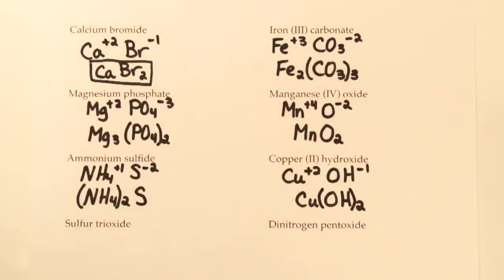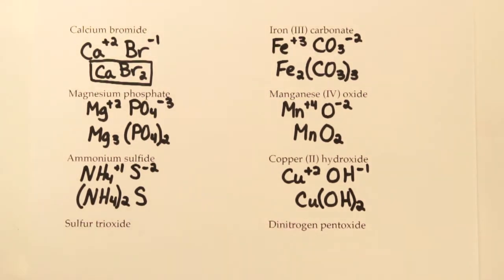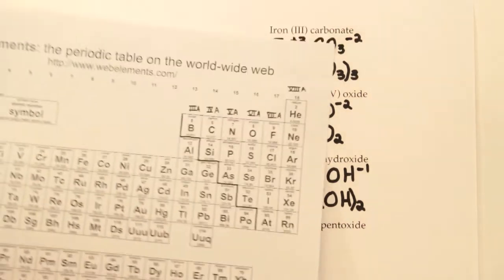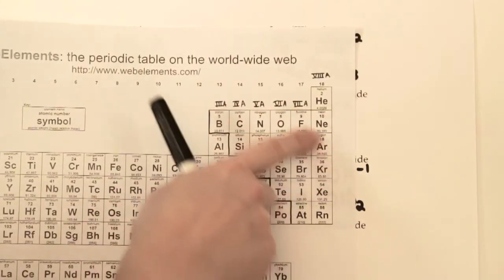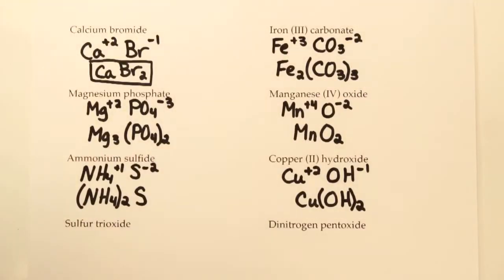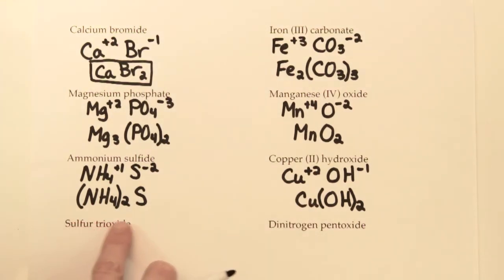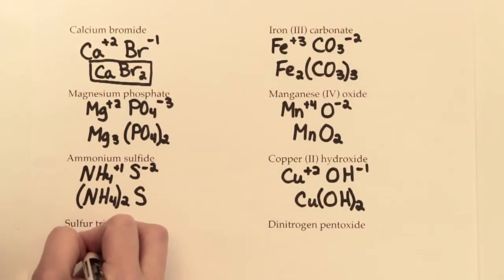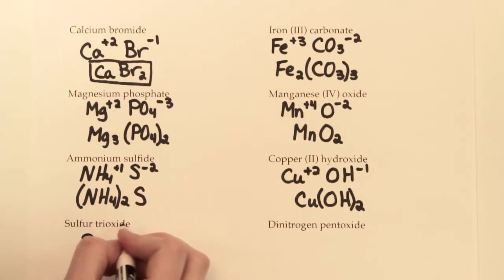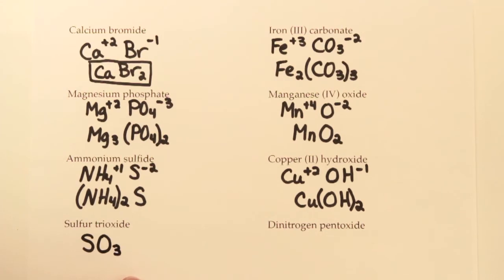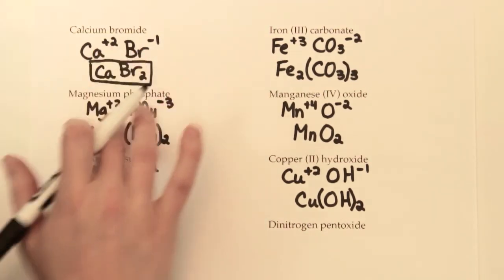All the examples so far have been ionic compounds — a metal with a nonmetal. The last examples are covalent compounds, which are made up of nonmetals only. There's a smaller variety because nonmetals occupy just a small corner of the periodic table. With covalent compounds, you don't work with charges at all — there's sharing of electrons rather than giving and taking. Instead, you just use the prefixes in the name to indicate how many of each element there are.